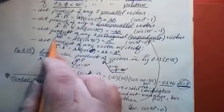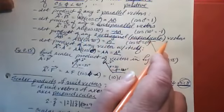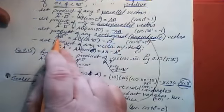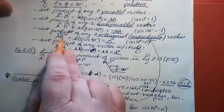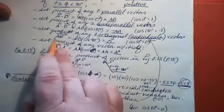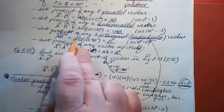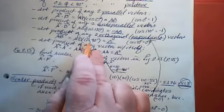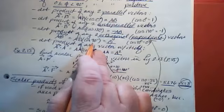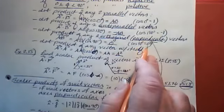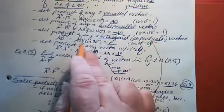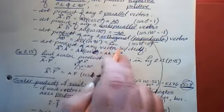The dot product of any two perpendicular — or orthogonal — vectors is zero. If vectors A and B are perpendicular, then A · B equals the magnitude of A times the magnitude of B times cosine(90°). Cosine of 90 degrees is 0, and 0 times A times B is still 0. So if the vectors are perpendicular, their dot product is zero.